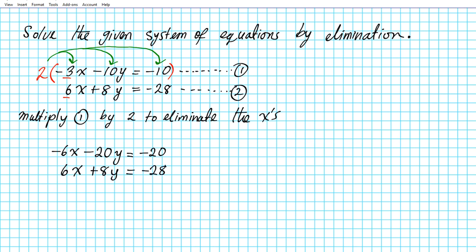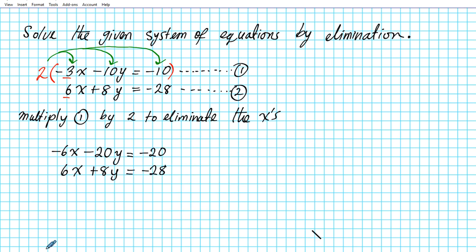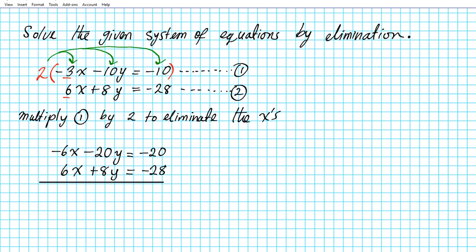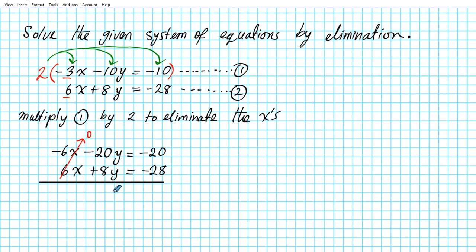What have we just accomplished? We have created opposites in the x column. We are creating opposites because upon combination that variable will be eliminated. When we combine the two equations, negative 6x and 6x add up to 0 and get eliminated. We are left with: negative 20 plus 8 gives us negative 12y. The signs are different so we subtract and keep the sign of the bigger number — that's 20. On the right side the signs are the same so we add and keep the sign: negative 48.